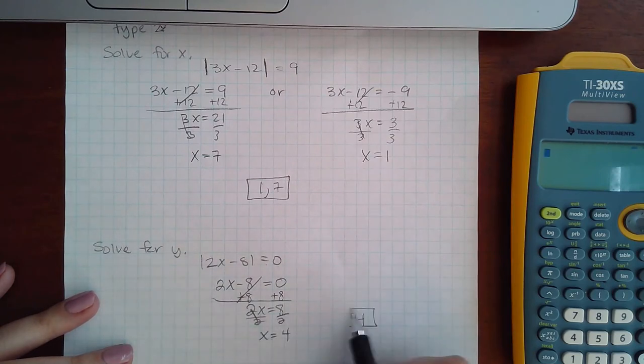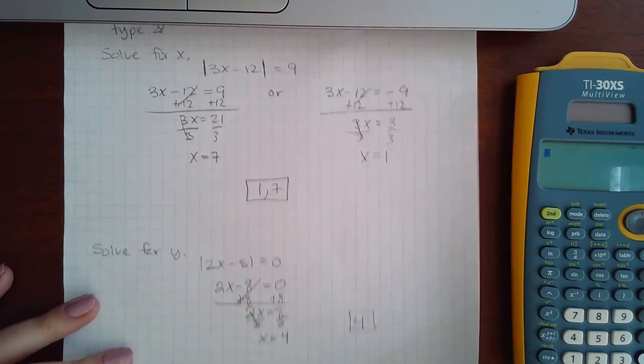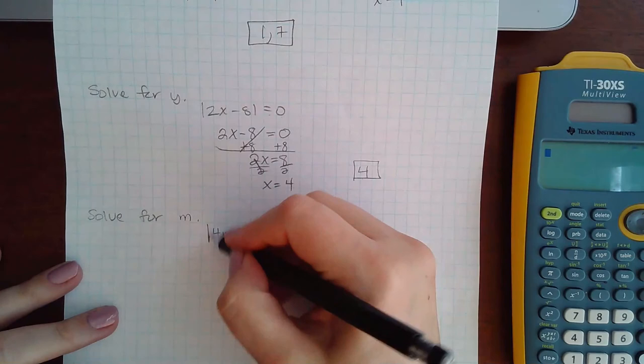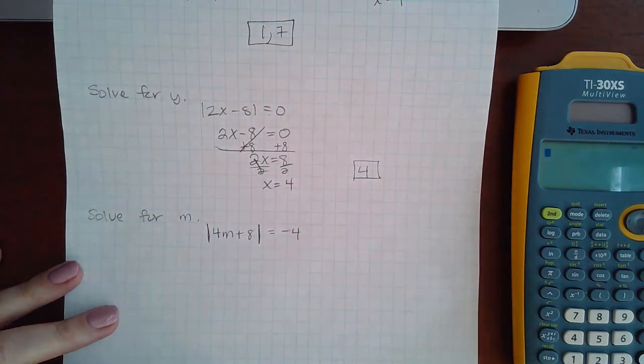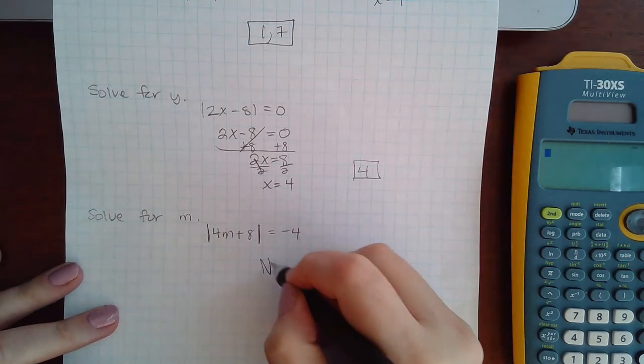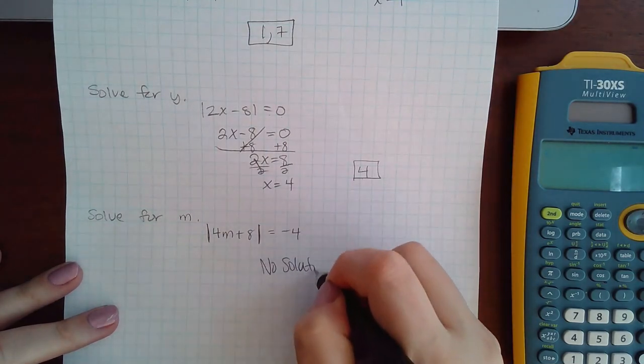And so we get one answer and that answer is 4. Finally, for the last one, I have absolute value bars already by itself, but we know the absolute value of anything can never be a negative. So in this case the answer is just no solution.